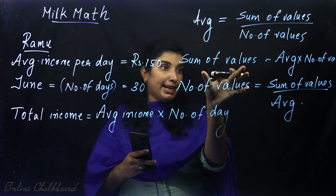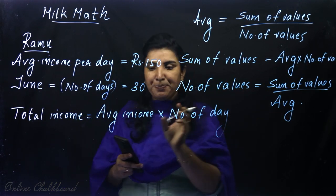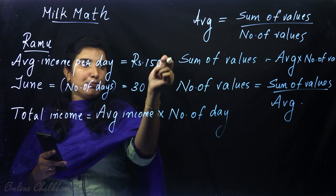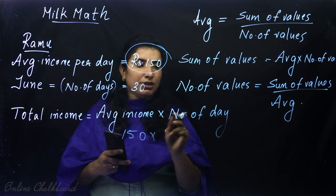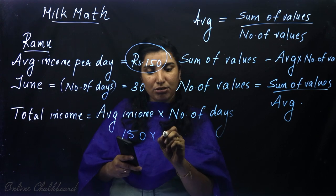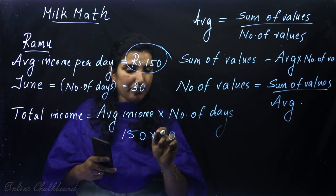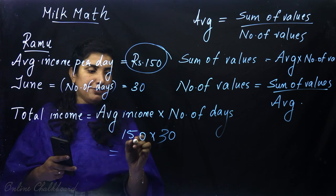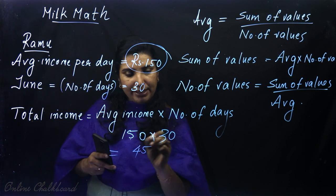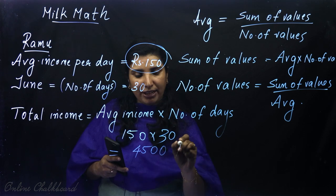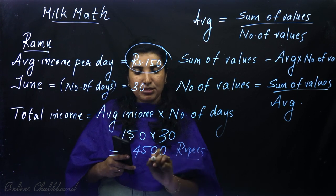Total income equals sum of values, which is average multiplied by number of values. The average income is 150 rupees, and the number of days in June is 30. So, 150 multiplied by 30 equals 4,500 rupees in June.